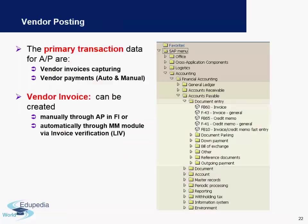What does the vendor posting look like and what are the primary data used for Accounts Payable? The primary transaction data for AP are vendor invoice capturing — when the invoice is posted in the system either automatically or manually — and vendor payments. These are the two primary transactions in accounting for vendors. Payments can be auto payments done on a daily, monthly, or weekly basis, or manual payments done by the finance team.